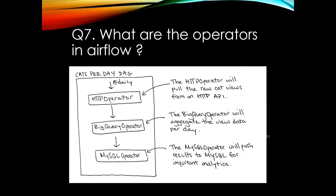Operators are essentially Python classes that encapsulate logic to do a unit of work. They can be viewed as a wrapper around each unit of work, defining the action to be completed and abstracting most of the code you'd typically need to write. Some examples include the Python operator, which executes a Python function; the Bash operator, which runs a Bash or Unix shell script; and the Kubernetes Pod operator, which executes a defined task on a Docker image in a Kubernetes pod.